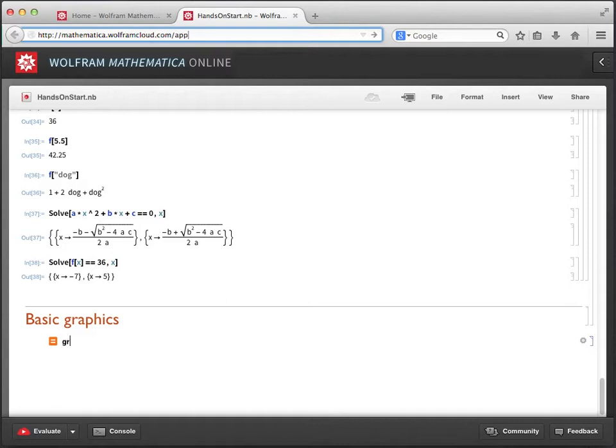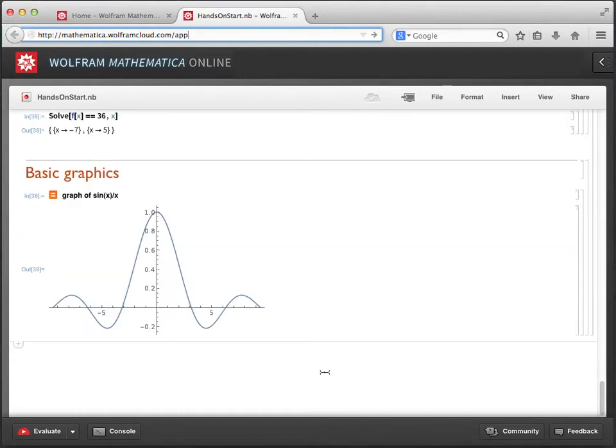Let's type graph of sine of x over x and press shift enter. As before, Mathematica Online interprets what we mean and we get the result of the calculation back.